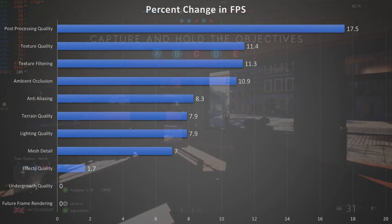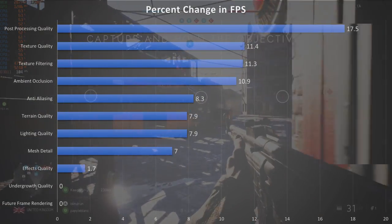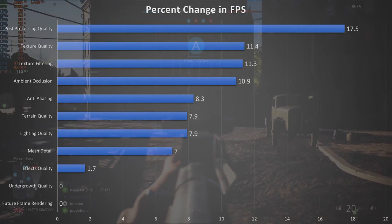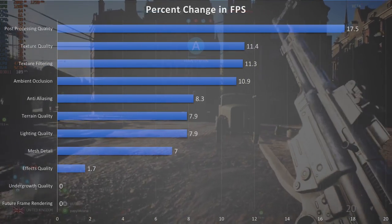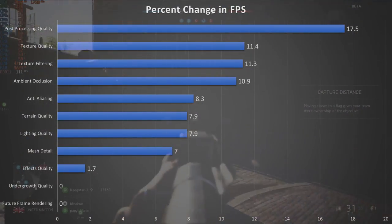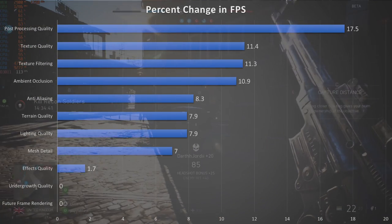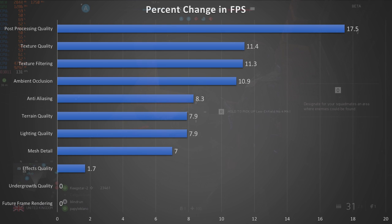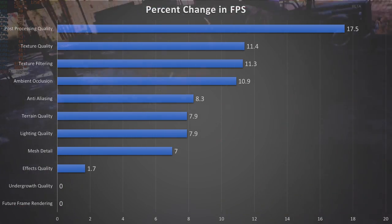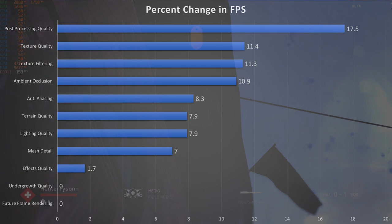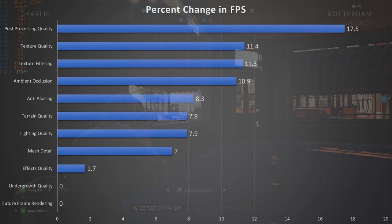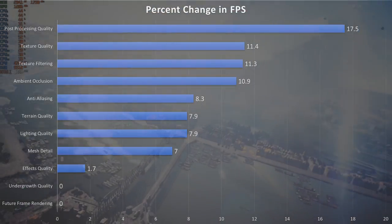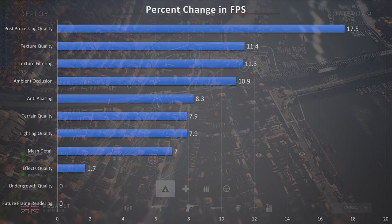Post-processing quality takes the big hit at a 17.5% change in FPS, and the worst result overall in my testing was post-processing quality, where you had 0.1% lows of 17 FPS, which is quite low. So if you're looking for the big culprit and you can't find what that is, that setting is definitely hurting performance significantly, especially with those 0.1% lows. Post-processing quality is the biggest tax on the system as of right now, during the beta.